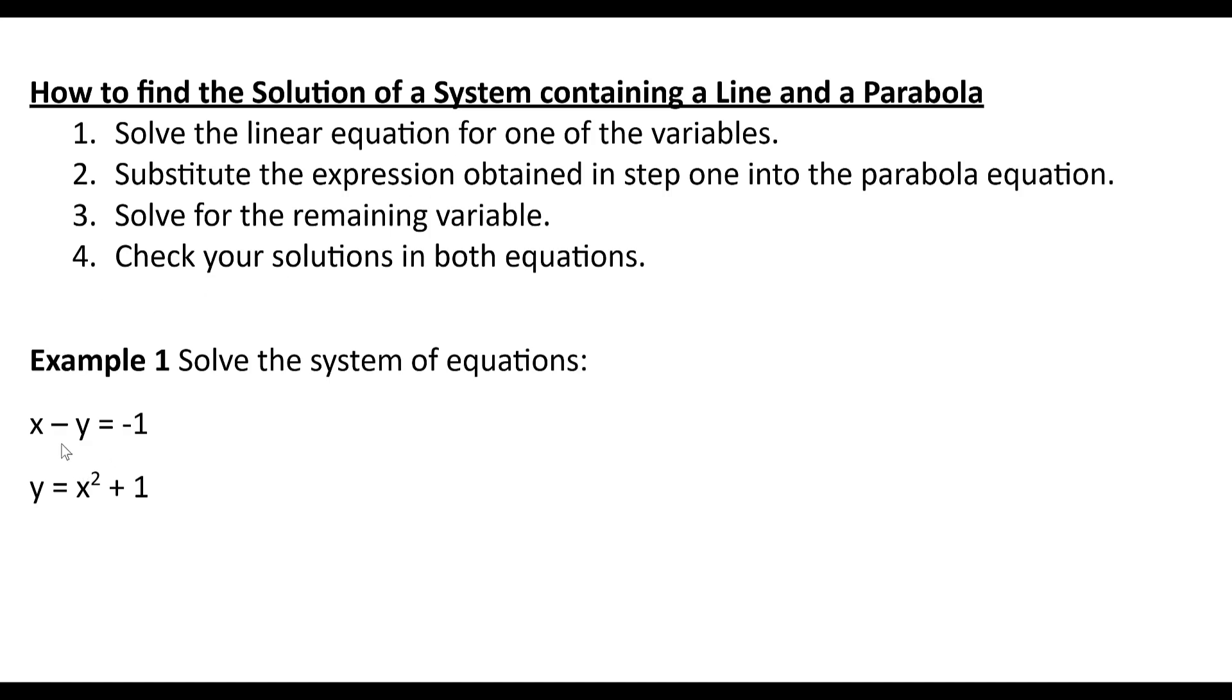So we have x minus y equals negative one, and we have y equals x squared plus one. We want to solve the system, and we can really solve for either of them. We typically would solve for y, but let's solve for x. So if we have x minus y equals negative one, and add y to both sides, x equals y minus one.